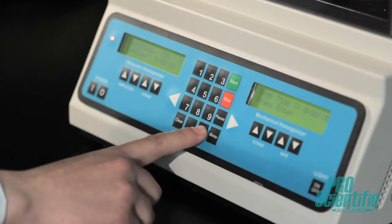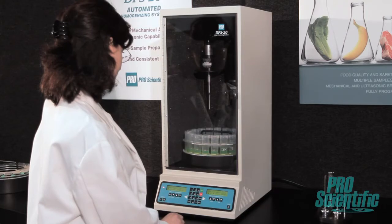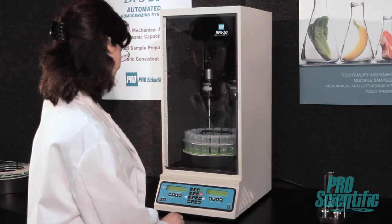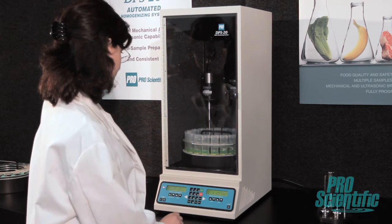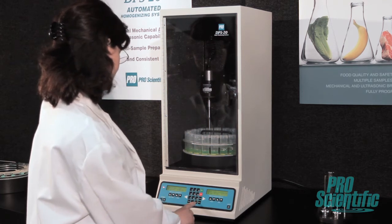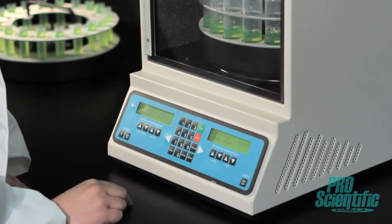The DPS20 can also be used in manual mode for quick runs. You simply set your parameters and go. During processing, the dual backlit display clearly shows your parameters along with the estimated total processing time.